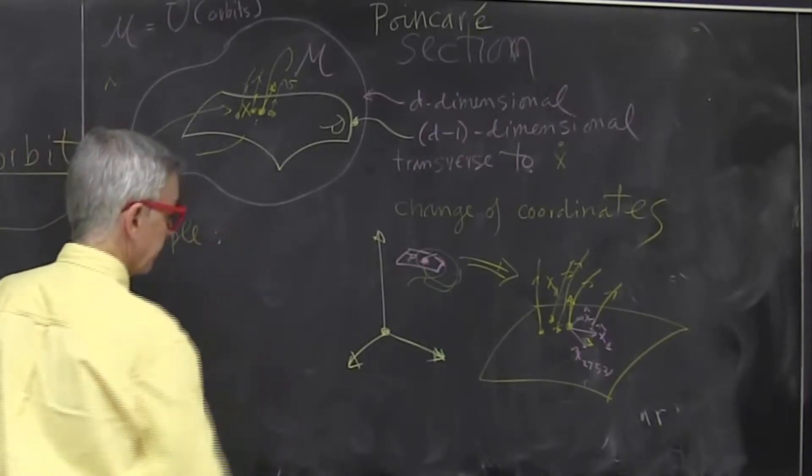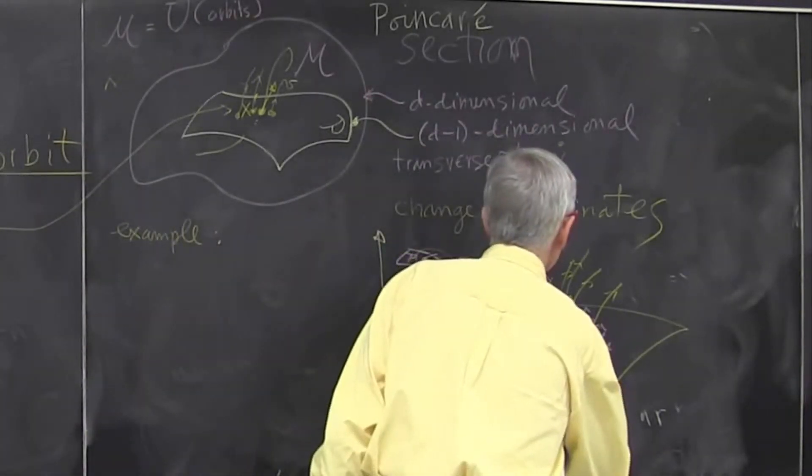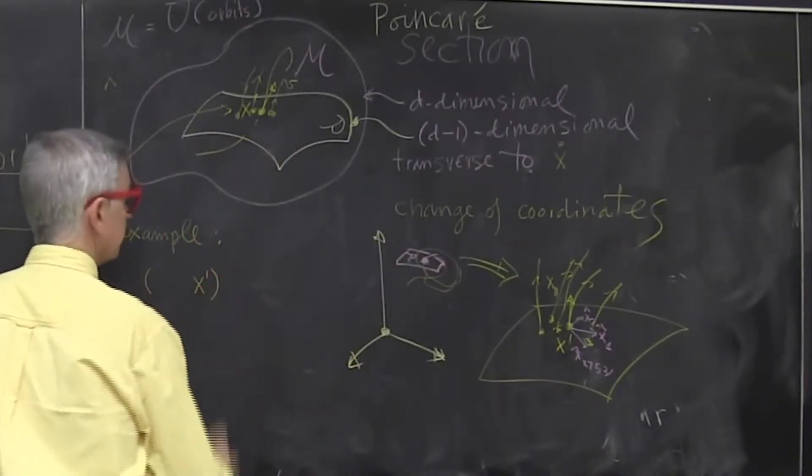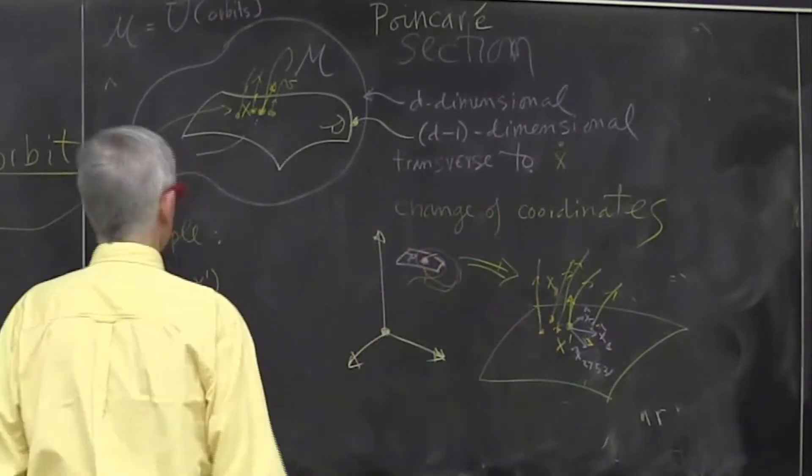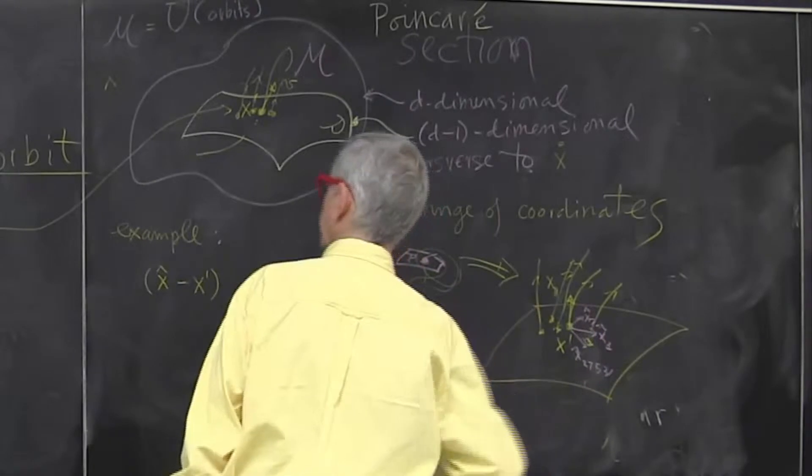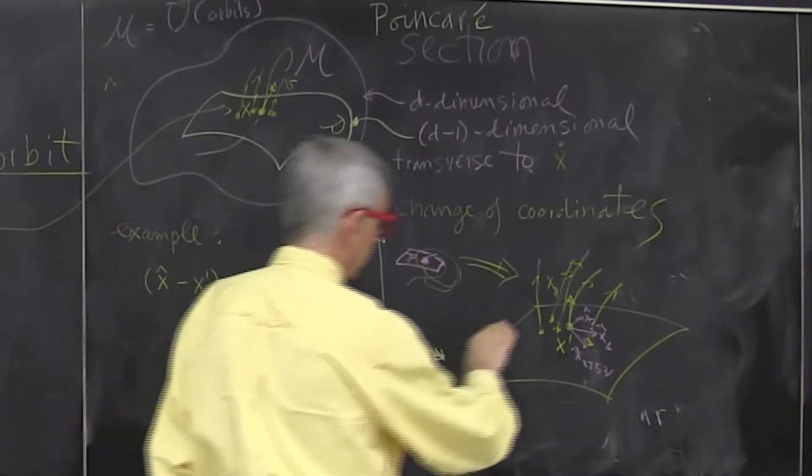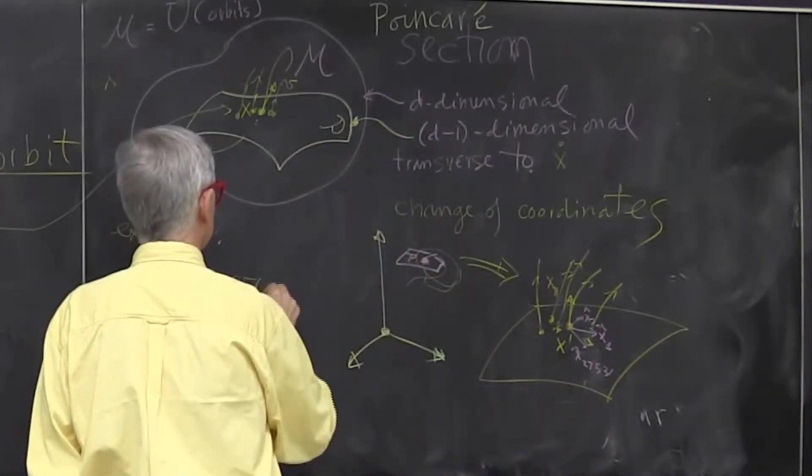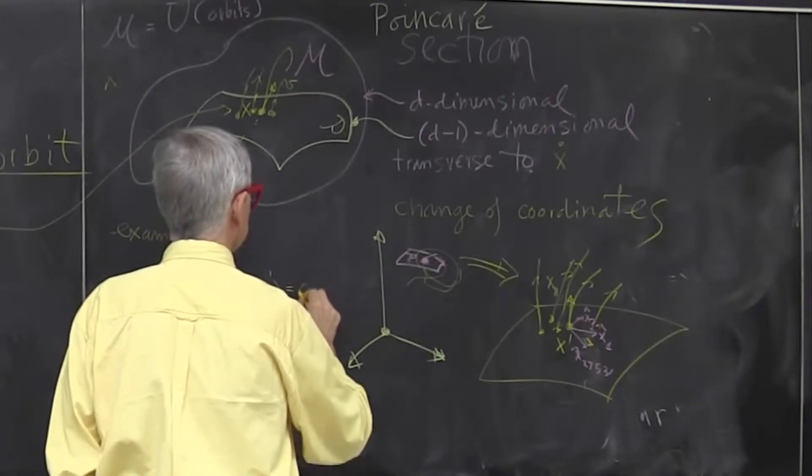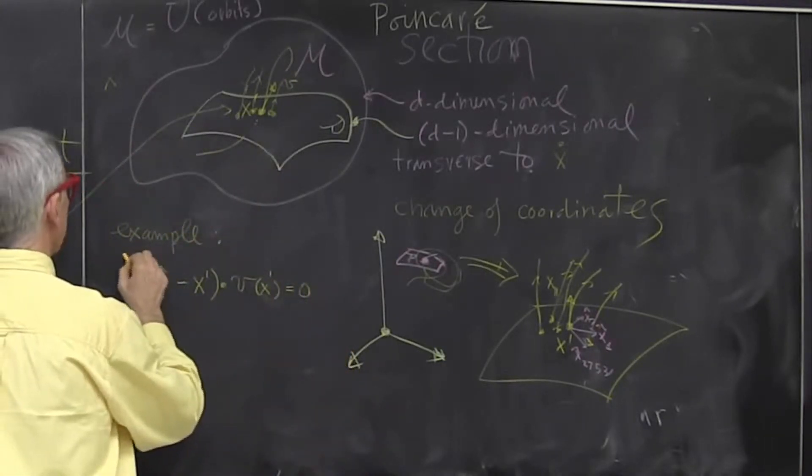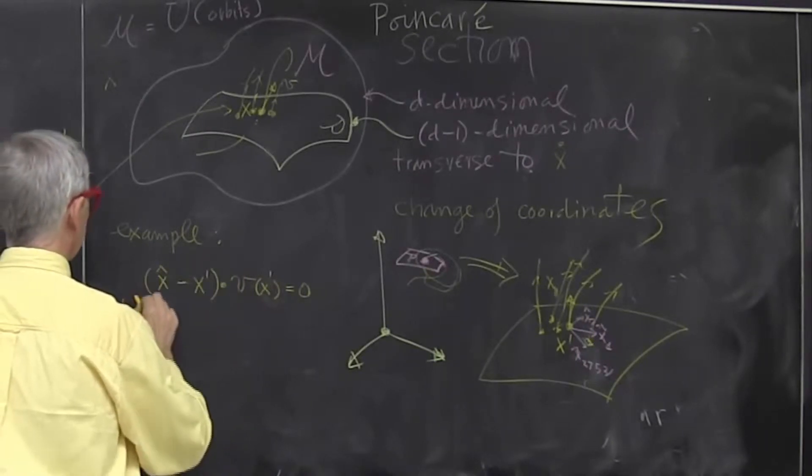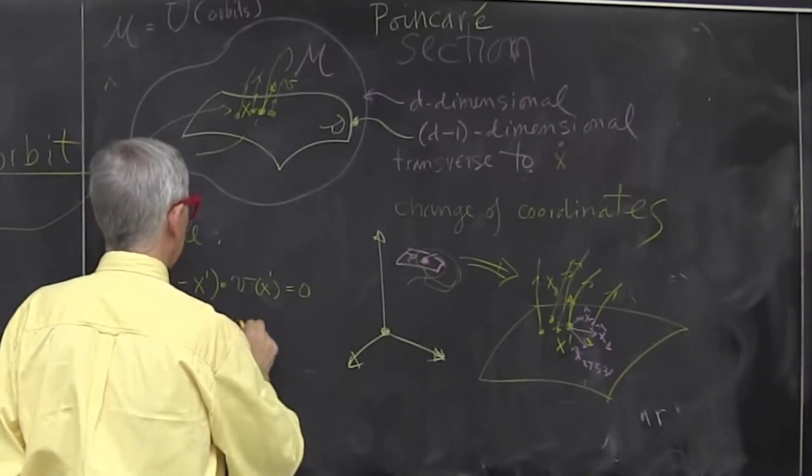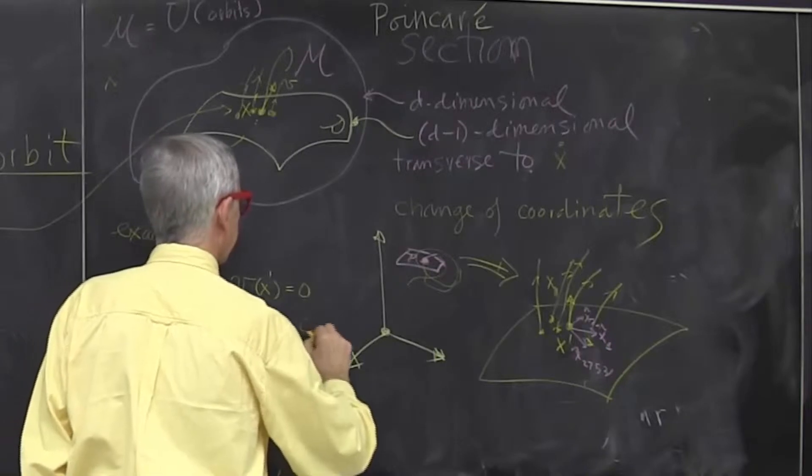So an example is you say, well, you know, I'm at a point x prime, and I would like to define a plane of points centered on x prime, which are orthogonal to, let's say, velocity of x prime. So this defines, this is hyperplane section.